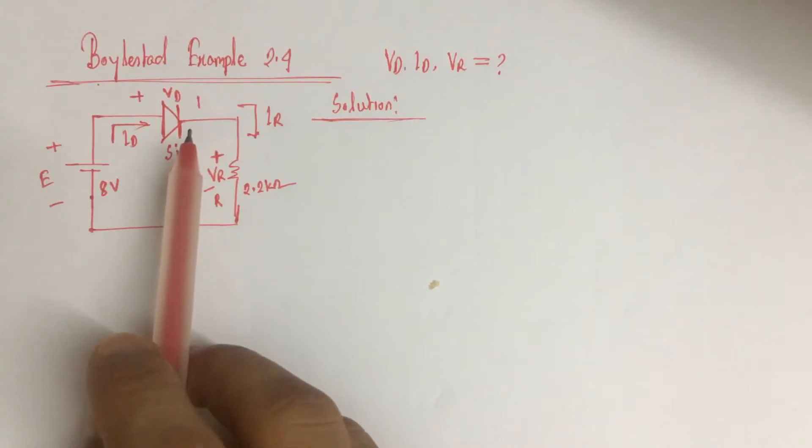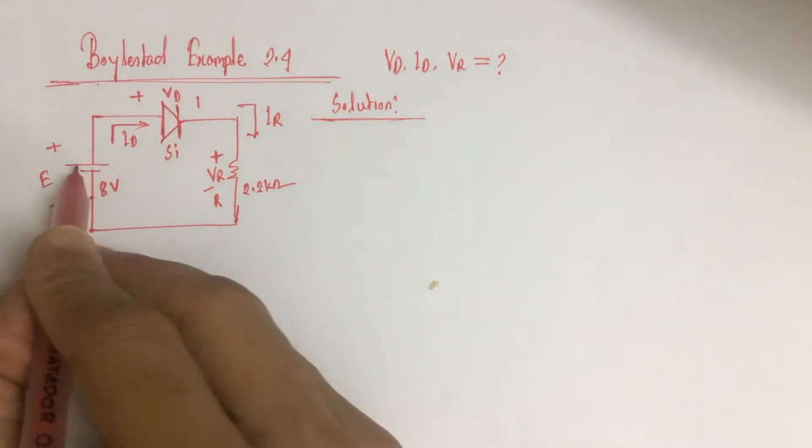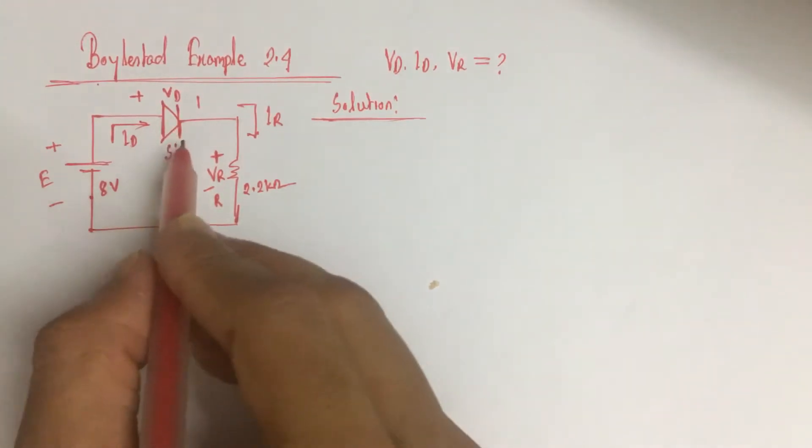So to identify the state of the diode, at first we have to see the biasing voltage and whether it is forward biased or reverse biased. From the circuit we see that the biasing voltage is 8 volt and the diode is forward biased.